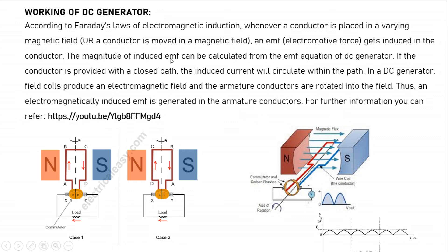These are the electromagnets that produce continuous flux, and these are the conductors which are rotating or moving in between the poles. The magnitude of induced EMF can be calculated from the EMF equation of the generator. If the conductor is provided with a closed path, connected with a commutator and brush segment, the induced current will circulate within the path and flow to the external circuit or external load.